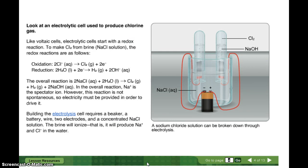Look at the electrolytic cell used to produce chlorine gas. Like voltaic cells, electrolytic cells start with a redox reaction. To make chlorine gas from brine — which is just a sodium chloride salt solution — the redox reactions are as follows. Oxidation: 2Cl⁻(aq) yields Cl₂(g) plus 2 electrons. Reduction: 2H₂O(l) plus 2 electrons yield H₂(g) plus 2OH⁻(aq). The overall reaction: 2NaCl(aq) plus 2H₂O(l) yield Cl₂(g) plus 2NaOH(aq). In the overall reaction, the sodium ion is the spectator ion. However, this reaction is not spontaneous, so electricity must be provided to drive it.